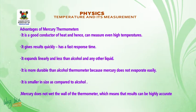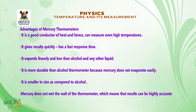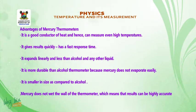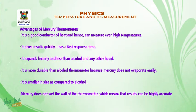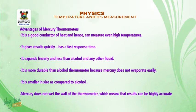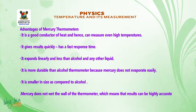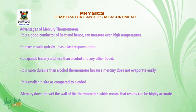Mercury does not wet the walls of the thermometer, which means results can be highly accurate. Disadvantages of mercury: it is highly toxic to living beings and the environment if the bulb breaks and mercury leaks out. Mercury is difficult to clean and can contaminate the surface on which it leaks. It cannot measure very cold temperatures and has low thermal coefficients.